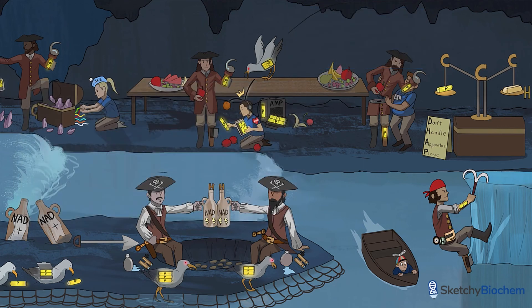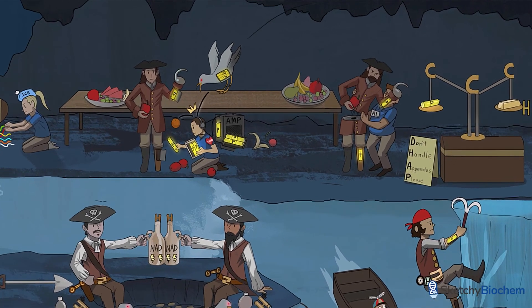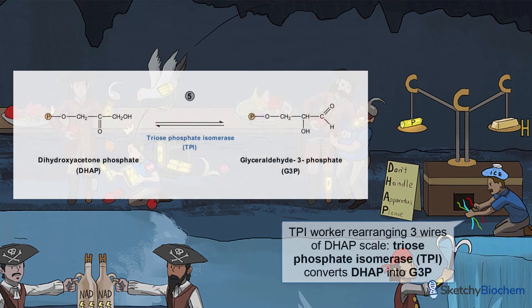While G3P is ready to move on to the payoff phase, DHAP needs a little extra love and attention. Triose phosphate isomerase, or TPI, comes to the rescue and isomerizes DHAP into G3P, just like a cast member rearranging some wires in our DHAP treasure scale.